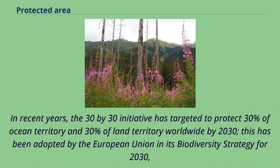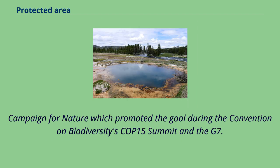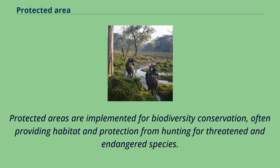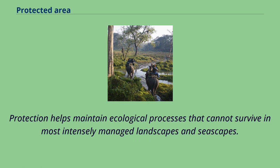In recent years, the 30 by 30 initiative is targeted to protect 30% of ocean territory and 30% of land territory worldwide by 2030. This has been adopted by the European Union in its biodiversity strategy for 2030, and promoted during the Convention on Biodiversity's COP15 summit and the G7. Protected areas are implemented for biodiversity conservation, often providing habitat and protection from hunting for threatened and endangered species.